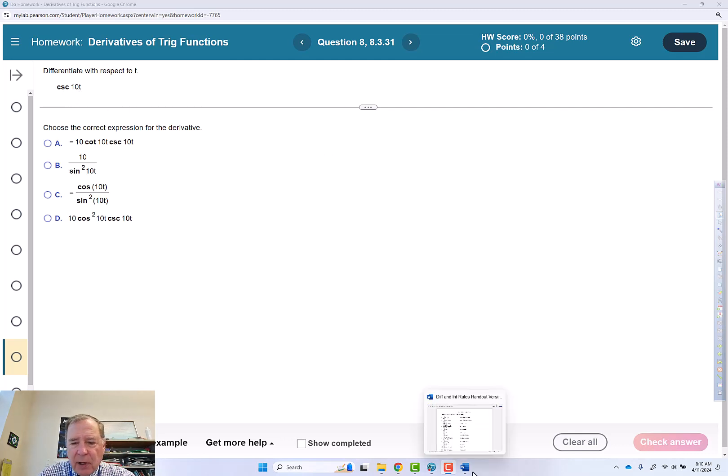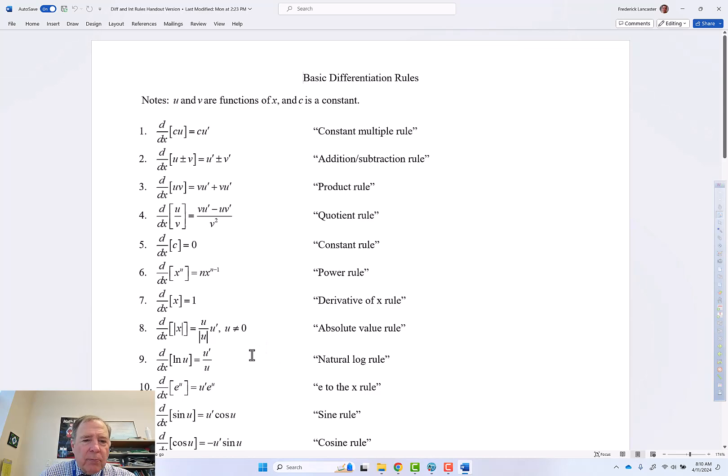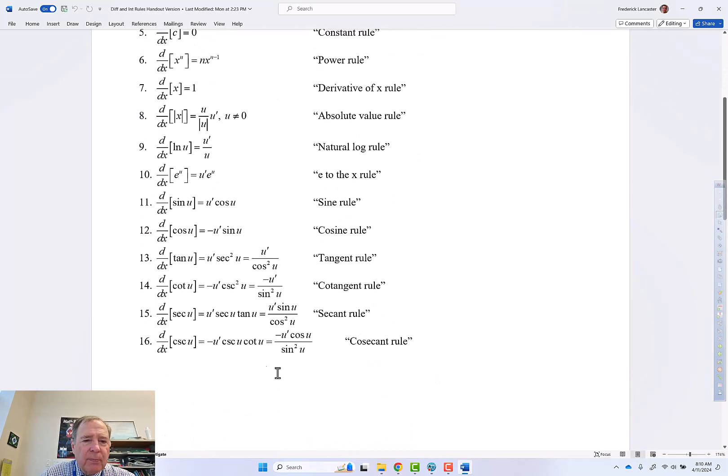So the first thing I'm going to do is go to my formula sheet and find cosecant. The derivative of cosecant u is negative u prime times cosecant of u times cotangent of u. And there's an alternate way to write it which is negative u prime times cosine of u divided by sine squared u, which is the same thing.